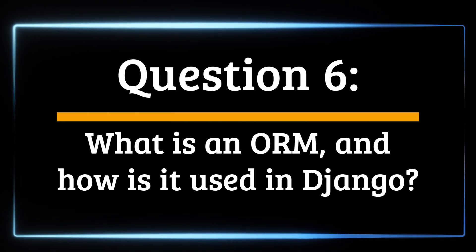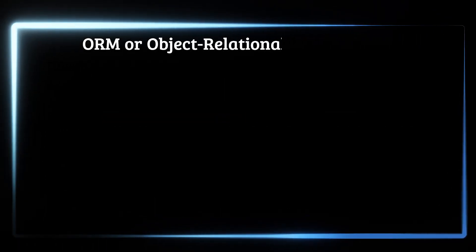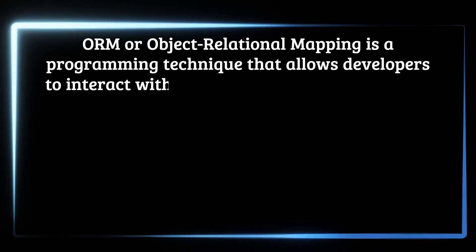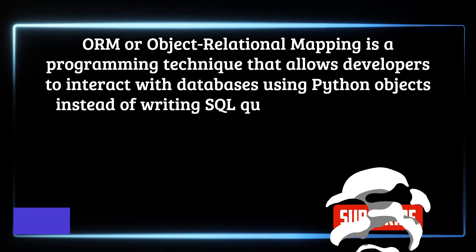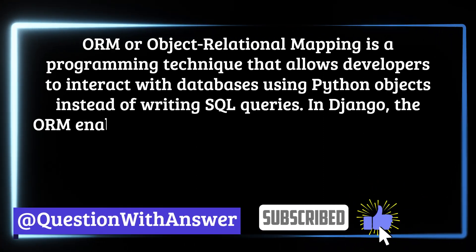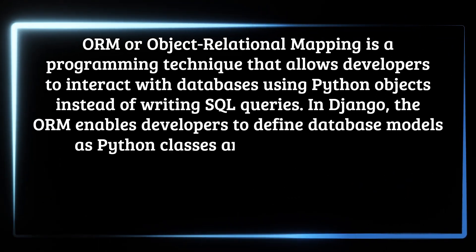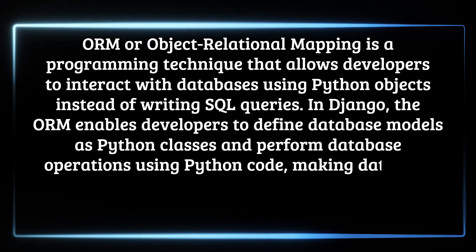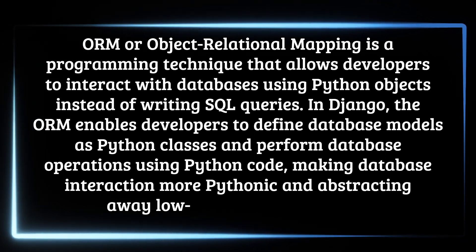Question 6: What is an ORM, and how is it used in Django? ORM, or object-relational mapping, is a programming technique that allows developers to interact with databases using Python objects instead of writing SQL queries. In Django, the ORM enables developers to define database models as Python classes and perform database operations using Python code, making database interaction more Pythonic and abstracting away low-level database details.